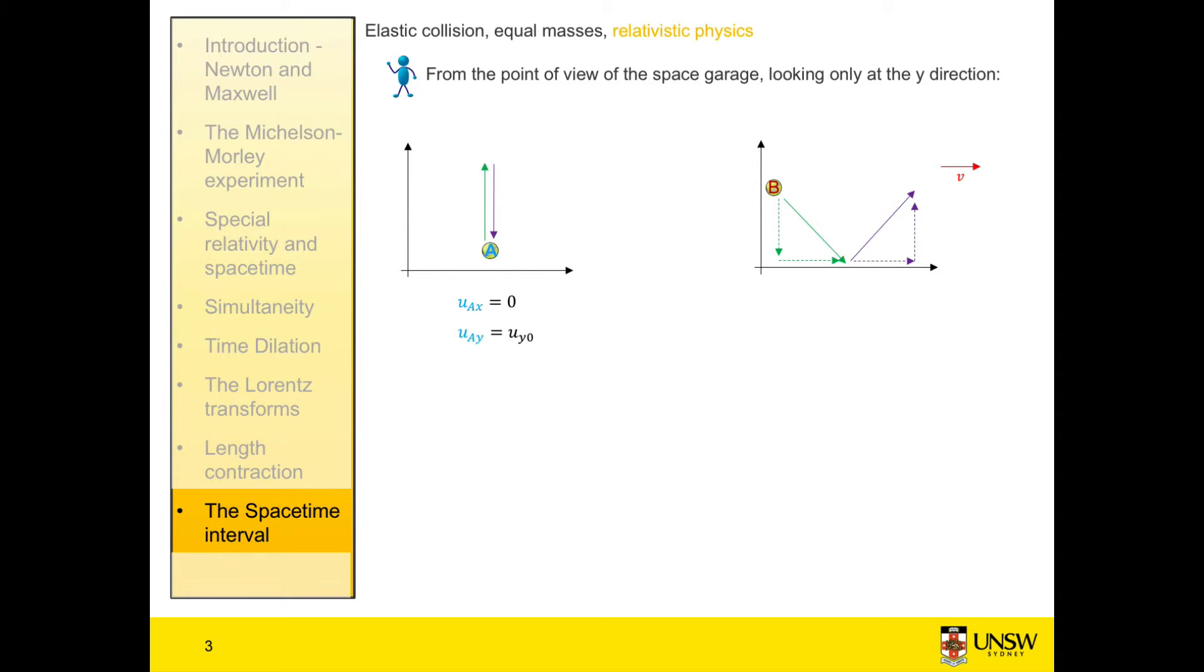From his point of view, our rocket ship is traveling with velocity v in the positive x direction. So he sees the path of ball B as shown in the diagram. The velocity of ball B has both an x component and a y component. According to him, the x component of ball B, the initial x velocity, is equal to v, the relative velocity of the spaceship.